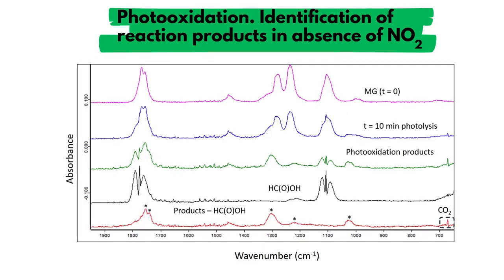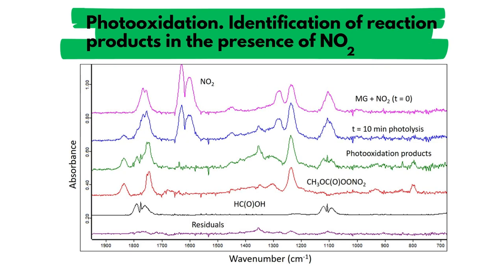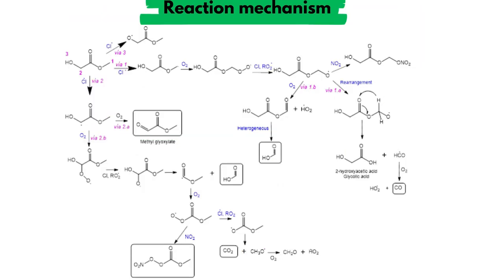The analysis of the infrared spectra obtained in the photo-oxidation in the absence of nitrogen dioxide reveals the formation of formic acid, methyl glyoxylate, and carbon dioxide. The spectra obtained when photo-oxidation is carried out in the presence of nitrogen dioxide shows the formation of formic acid and the peroxynitrate.